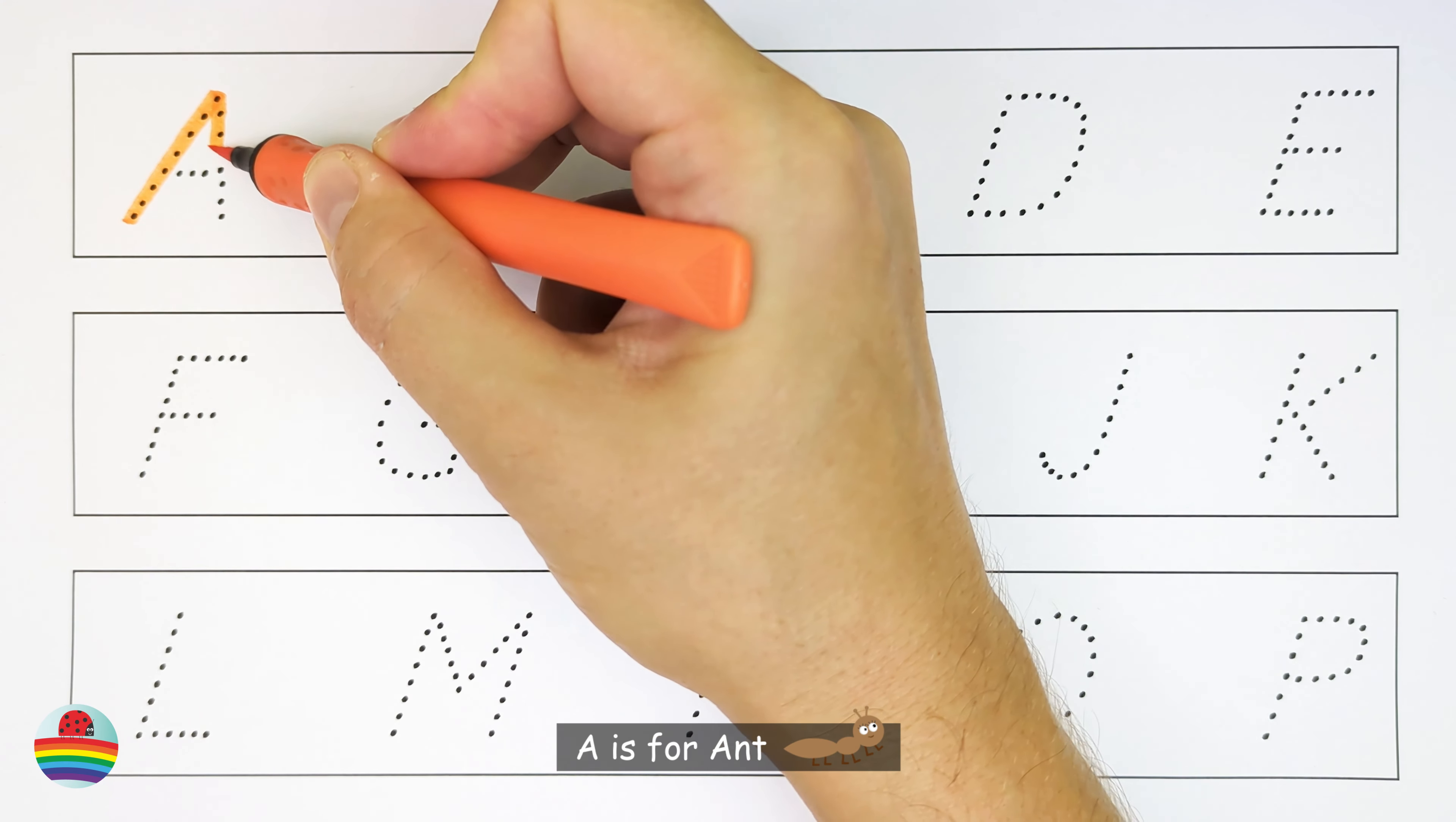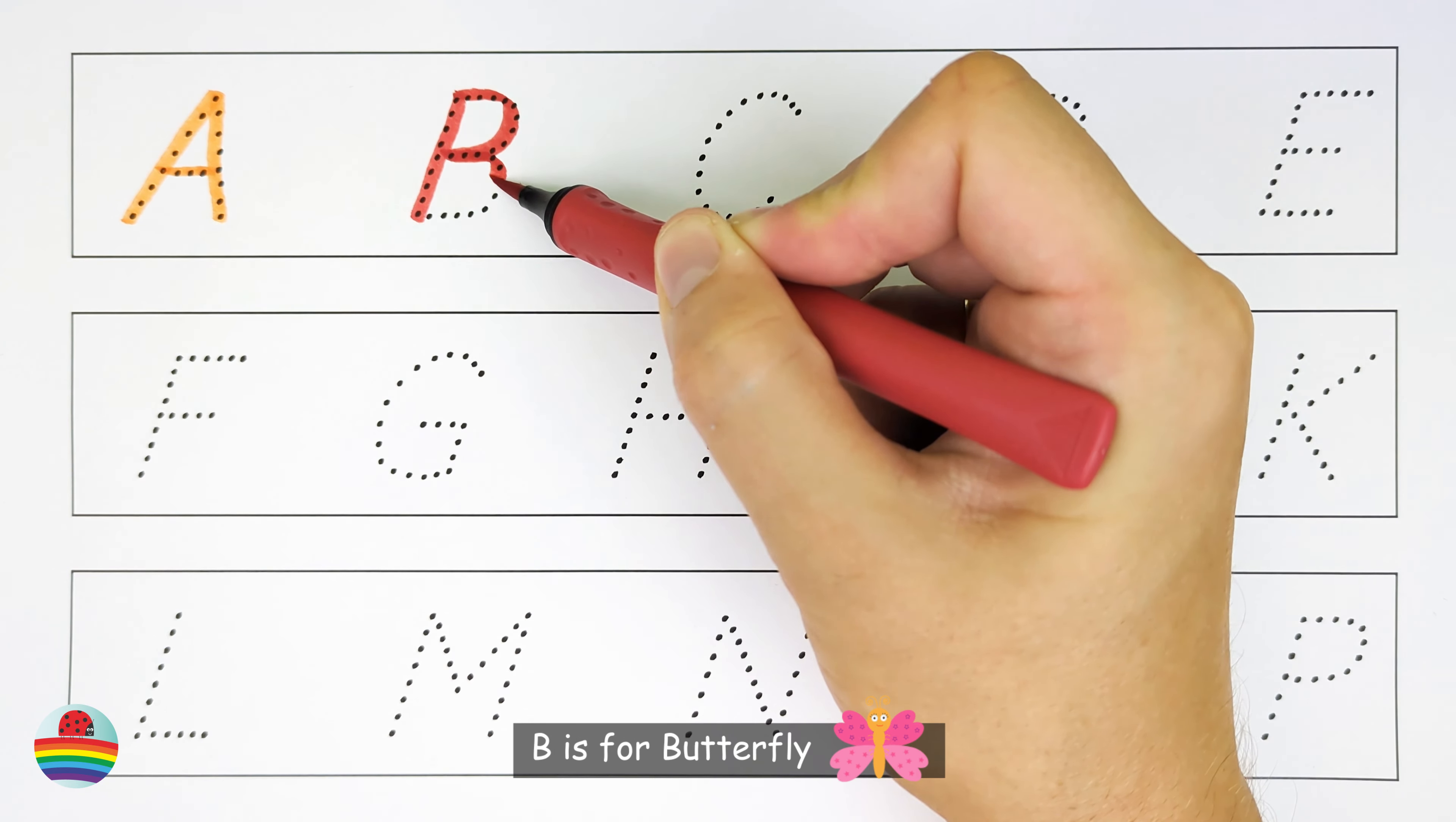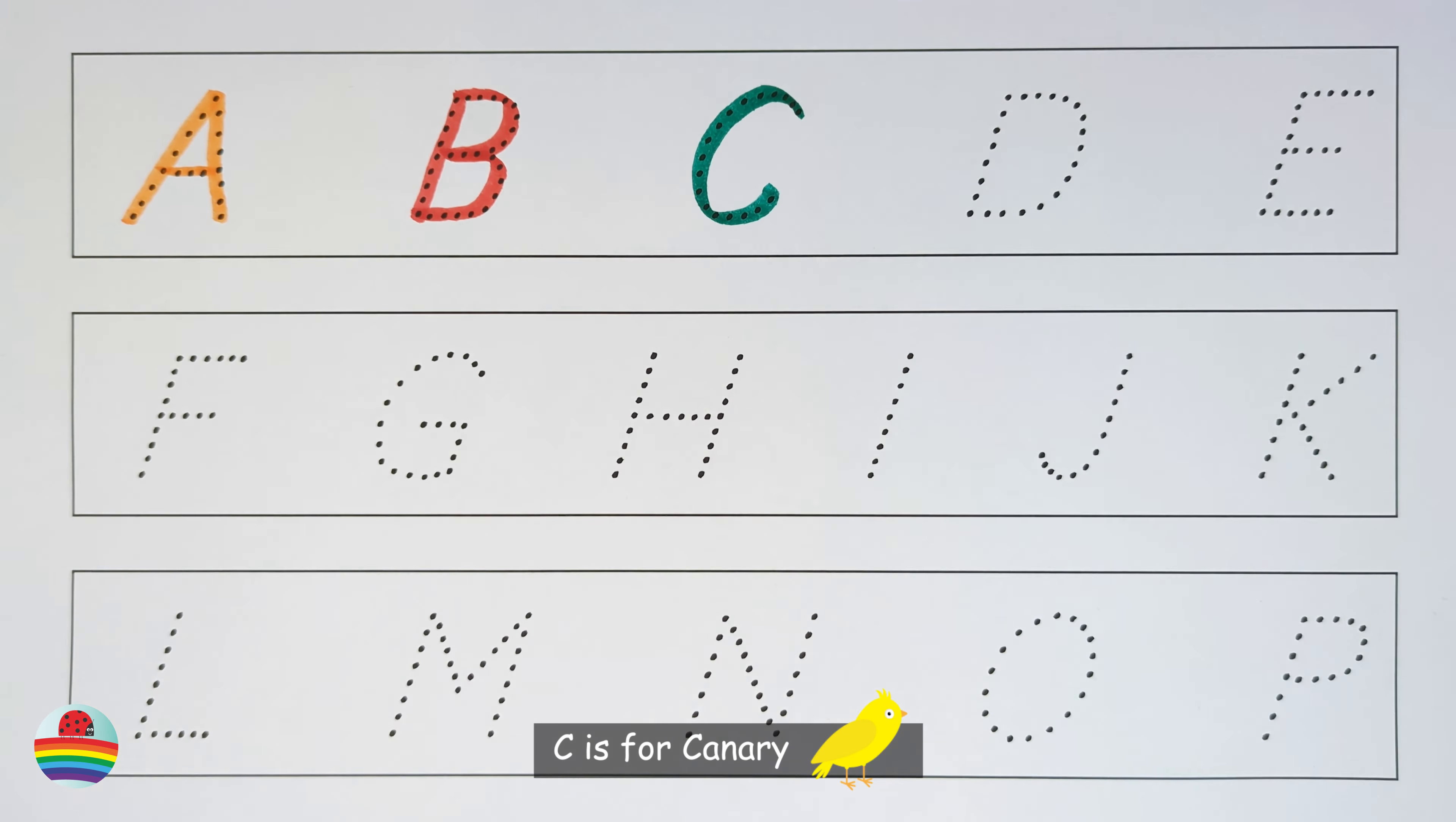A. A is for Ant. A. B. B is for Butterfly. B. C. C is for Canary. C.